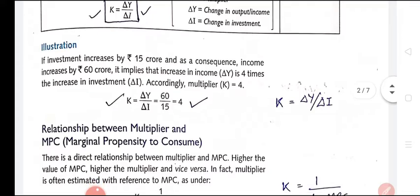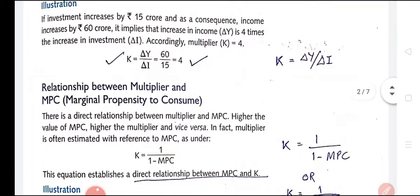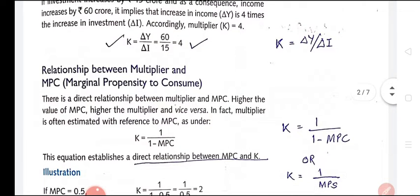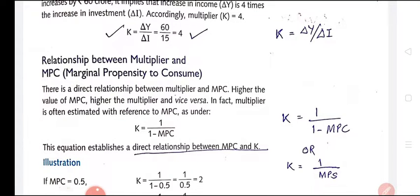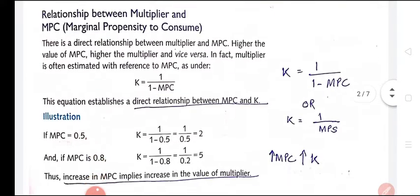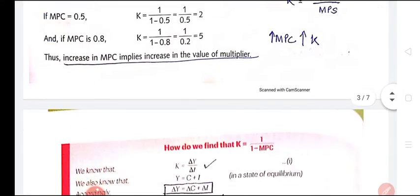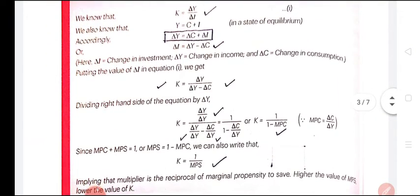You can also see this as an illustration. K is denoted by change in Y divided by change in I. The multiplier K is also related to marginal propensity to consume, expressed as 1 upon 1 minus MPC. We learned the derivation of how this formula is obtained. K equals change in Y by change in I, which is the ratio between change in income and change in investment.